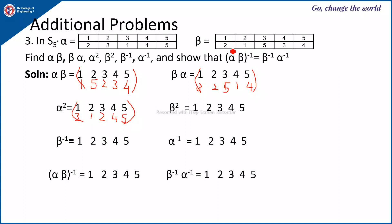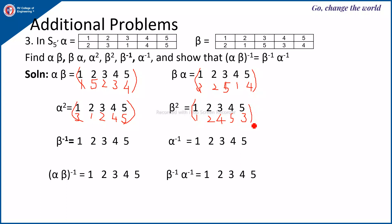Similarly, beta squared is beta composed with beta — you look up each element twice in the same table. For element 1: beta sends 1 to 2, then 2 to 1, so 1 goes to 1. For element 2: 2 to 1, then 1 to 2, so 2 goes to 2. For 3: 3 to 5, then 5 to 4, so 3 goes to 4. For 4: 4 to 3, then 3 to 5, so 4 goes to 5. For 5: 5 to 4, then 4 to 3, so 5 goes to 3. This is your beta square.